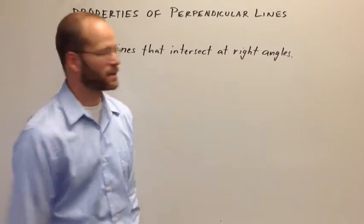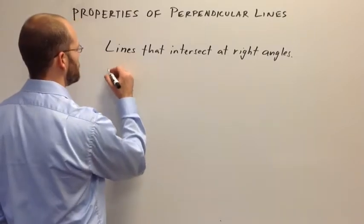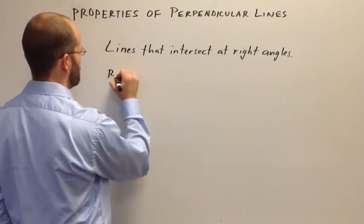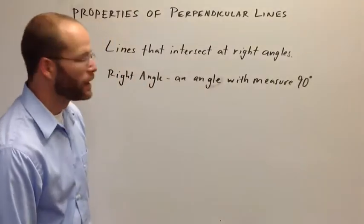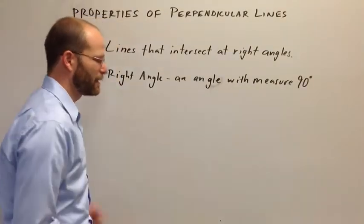The next question, of course, is what's a right angle? You may remember a right angle is an angle with a measure of 90 degrees. Therefore, we're talking about line pairs that intersect each other and form 90 degree angles.